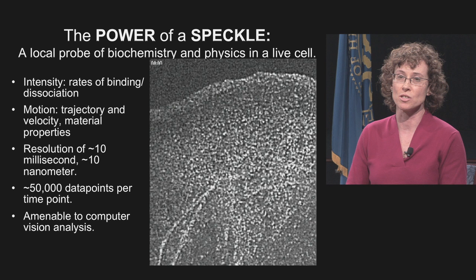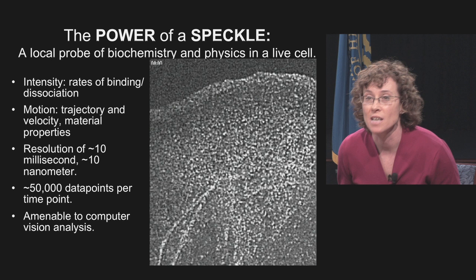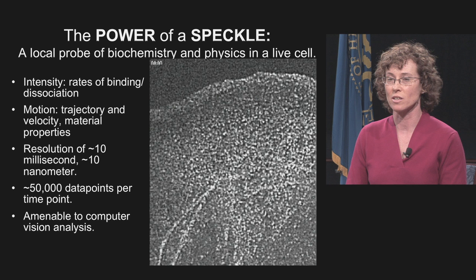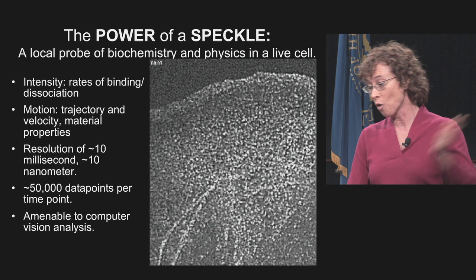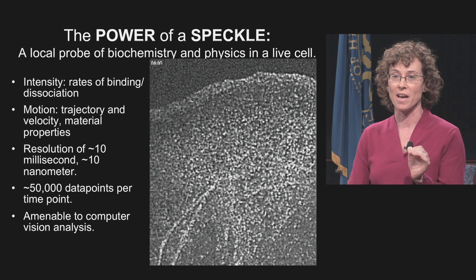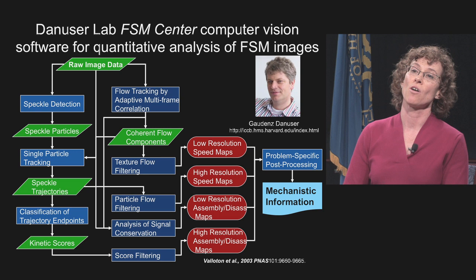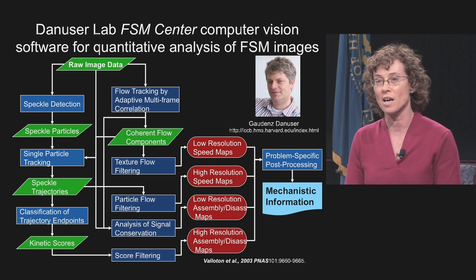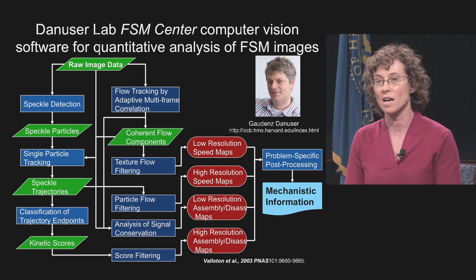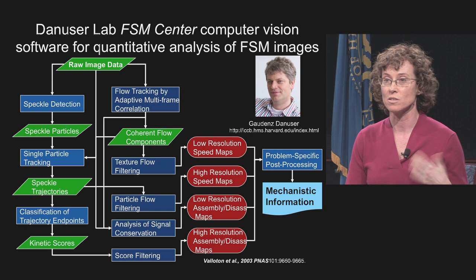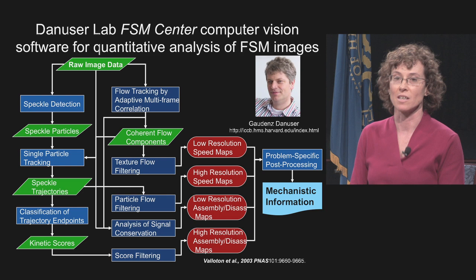You can collect these images with a sensitive camera on the timescale of about 10 milliseconds and track speckles by fitting point spread functions on the order of about 10 nanometers. The information content is massive — each image has about 50,000 speckles, and over time there are hundreds of thousands. To overcome this, we collaborated with computer vision scientist Gaudenz Danuser, now at Harvard Medical School, who developed image analysis algorithms to locate and track speckles individually or using texture-based tracking, giving maps of motion, speed, assembly, and disassembly rates.